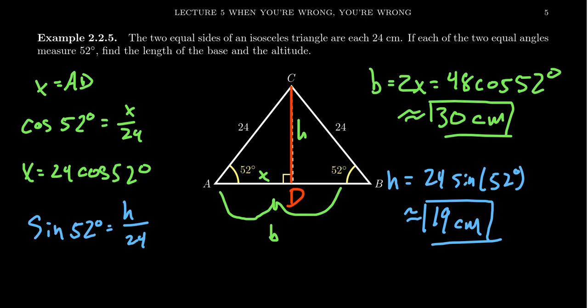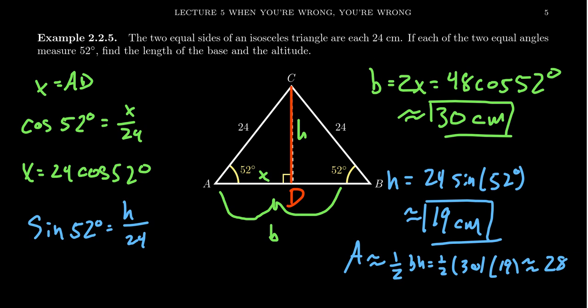Now that we have the height and the base, we can find the area of the triangle. We take one-half base times height: one-half times 30 times 19. Half of 30 is 15, times 19, gives us 285 square units of area.